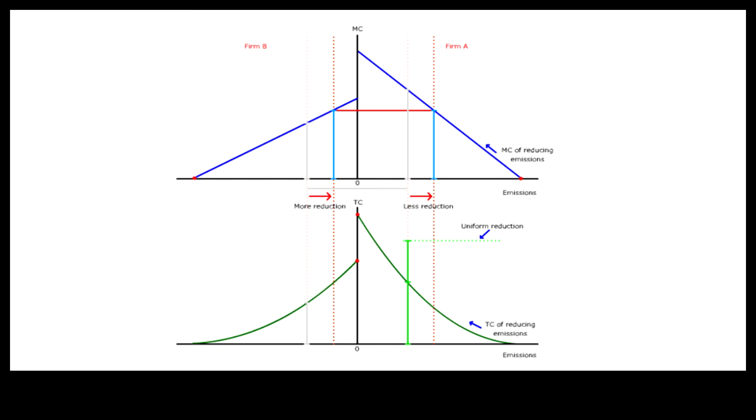Let us add the total cost from Firm B on top of Firm A to compare the total cost of the two approaches to pollution reduction. Indeed, redistributing pollution reduction from the higher cost Firm A to the lower cost Firm B results in cost savings.